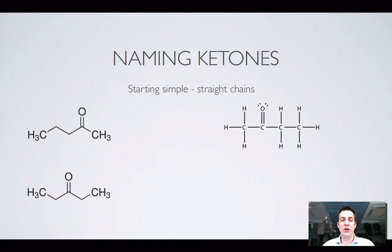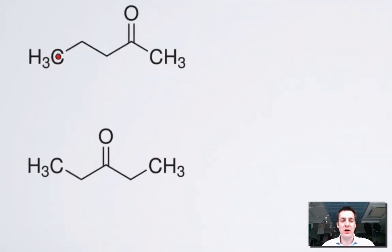Naming ketones is rather like naming aldehydes and alcohols, except it's more like naming alcohols because you have to specify where the ketone group is. Looking at this ketone with five carbons, I'd call it pentanone. But since the carbon-oxygen double bond is on the second carbon, I call it pentan-2-one.